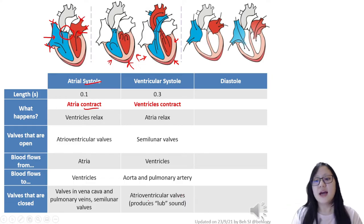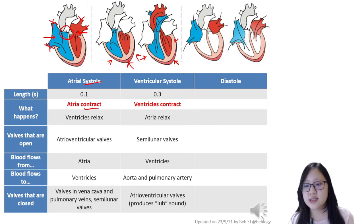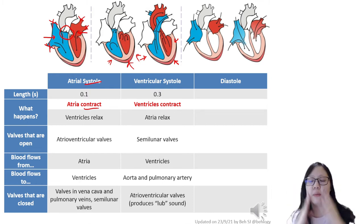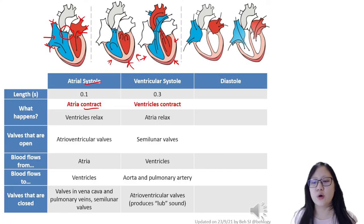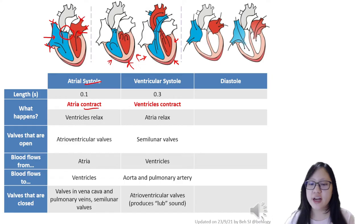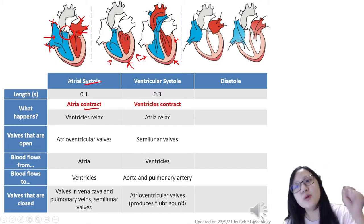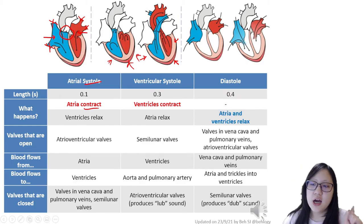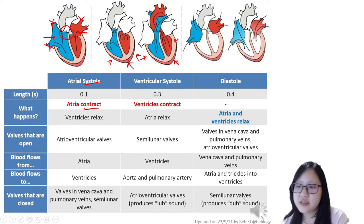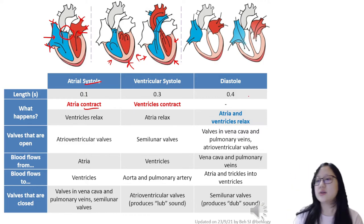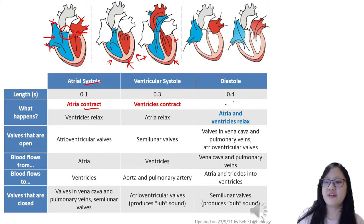The closing of the atrioventricular valves is the sound you hear when you put a stethoscope to the chest. It produces a 'lup' sound — lup-dup, lup-dup. That 'lup' is the AV valve closing. The 'dup' is what happens next: the semilunar valves closing.